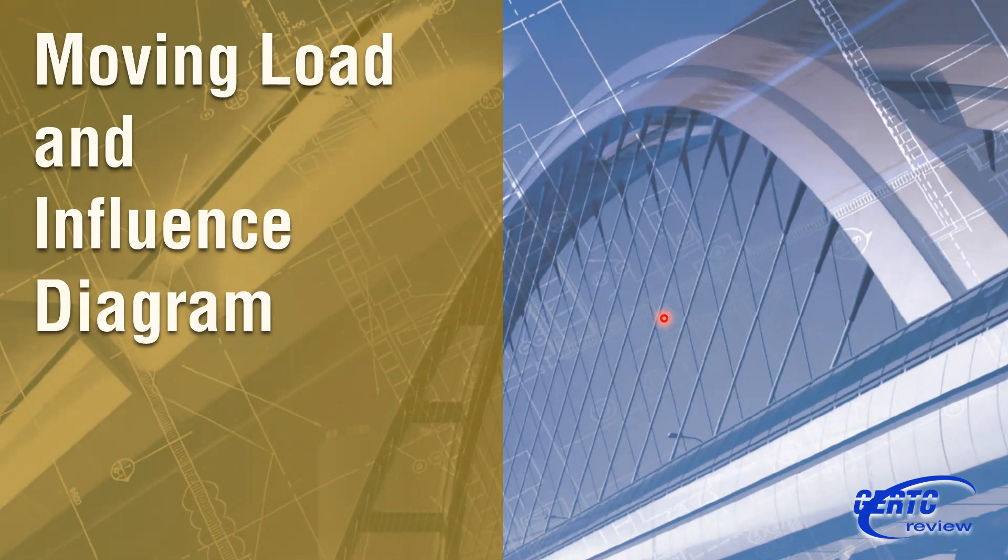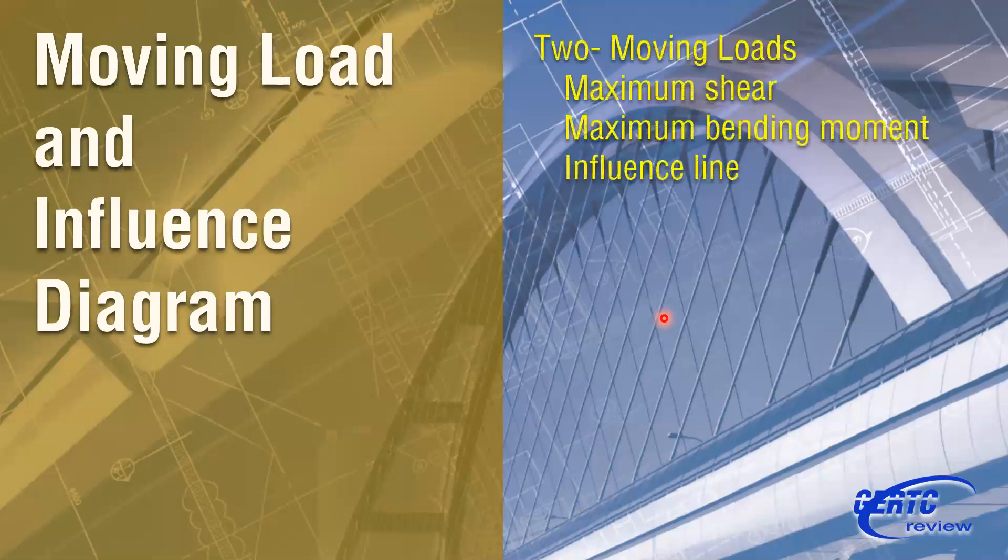So we will be talking here of moving load. We have a sample problem dealing with moving loads and use of influence line. Of course, we know that influence line is designed for moving loads. So this problem will have two moving loads and then we have to find the maximum shear, the maximum bending moment, and the maximum shear at a particular point in the beam. With that, we will be using influence line.